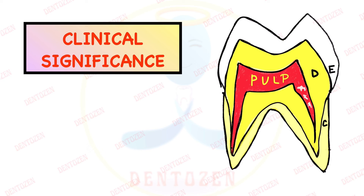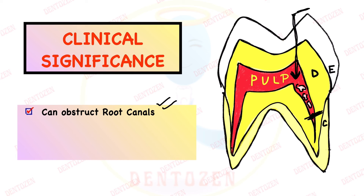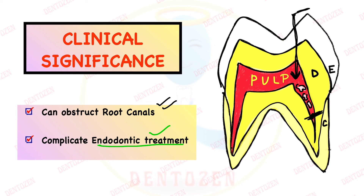Regarding the clinical significance of pulp stones: if the pulp gets infected and you want to remove it with an instrument — going to the end of the root canal — these pulp stones can obstruct your path and not let you reach the end. They can obstruct the root canals and interfere with treatment, complicating endodontic (root canal) treatment. If your instrument is not progressing, you can take a radiograph and look for these radiopaque structures inside the pulp, which could be pulp stones.